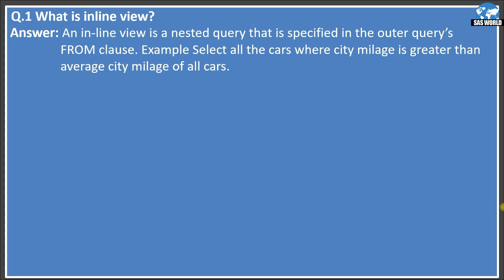In this example, we want to select all the cars where city mileage is greater than the average city mileage of all cars. We are going to use the sashelp.cars dataset, which has a variable MPG_City, or city mileage. We need to select all the cars where city mileage is greater than the average city mileage of all cars.